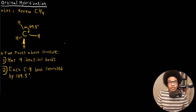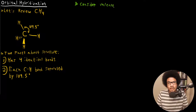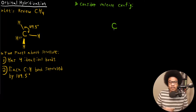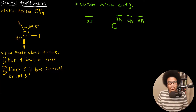Considering these two facts about the structure, let's try to take what we know about atomic orbitals and see if we can explain this bonding pattern using just atomic orbitals. The first thing we want to do is consider the valence configuration for carbon. Carbon has four valence electrons — some in the 2S and some in the 2P. I'll label these 2Px, 2Py, and 2Pz, since each of those P orbitals lies along a different axis. So these are the valence orbitals for carbon.